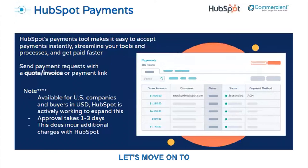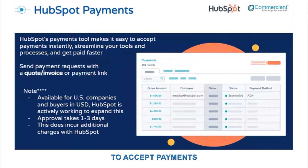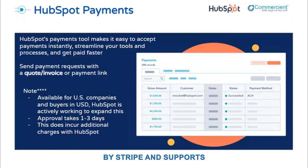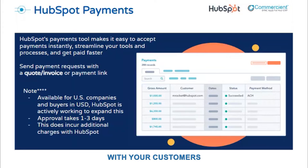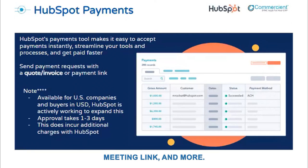Let's move on to the second component of Commerce Hub: payments. The HubSpot payments tool allows you to accept payments through HubSpot. This platform is powered by Stripe and supports all major credit cards and ACH payments. It utilizes either quotes or payment links to request payment, allowing you to collect one-time and recurring payments. Payment links can be shared directly with your customers via email or chat, or placed directly on your website, landing page, form, meeting link, and more.